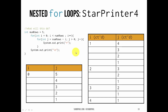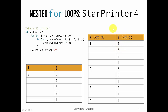When i starts at 0, j starts at 5. We print a star, then when j is decremented to 4, 3, 2, and 1, we print more stars. So in the first row, we've printed 5 stars. When we exit the inner loop, we print a new line, increment i to 1, and reenter the inner loop — this time j initializes to num_rows minus 1, which is 4, and we count down to 0, printing 4 stars in the second row. When i is 2, j gets initialized to 3 and we print 3 stars, and so on.